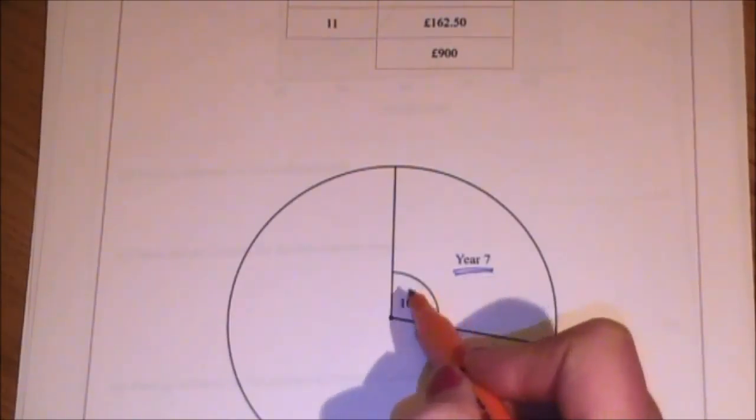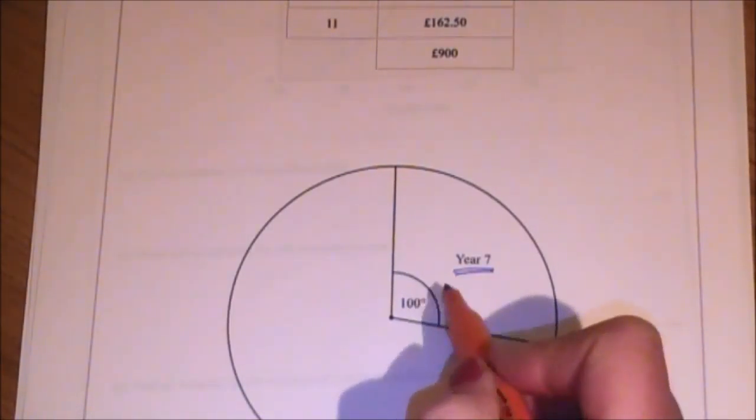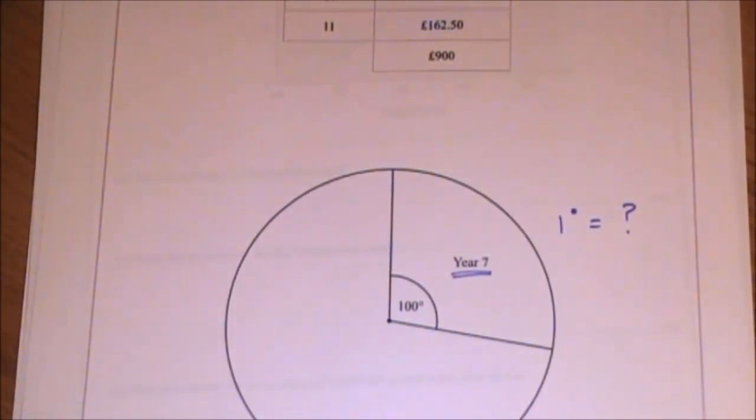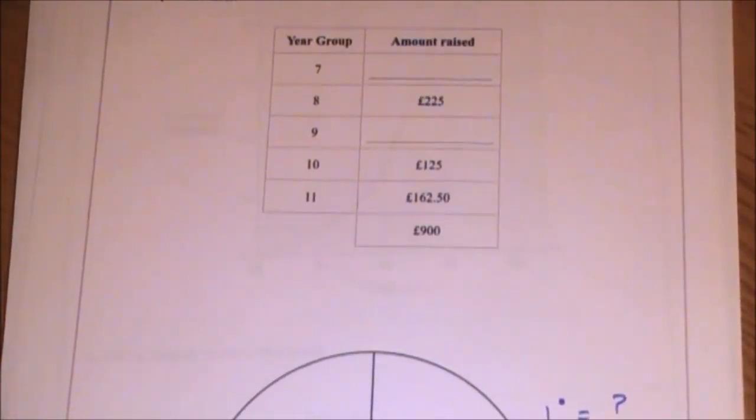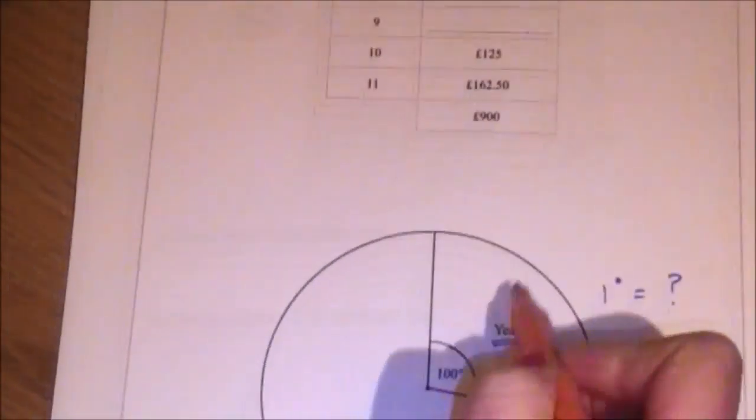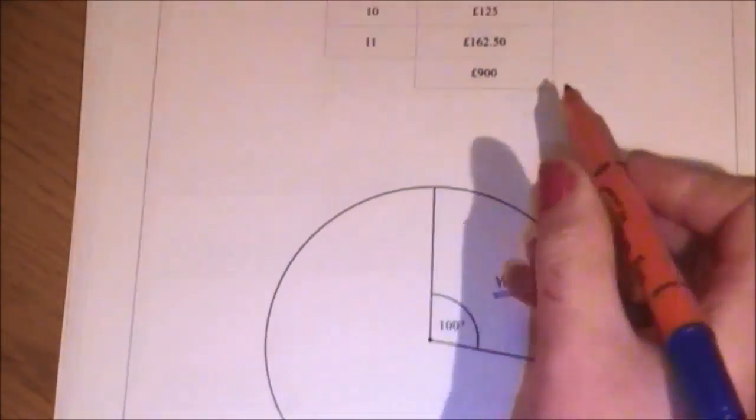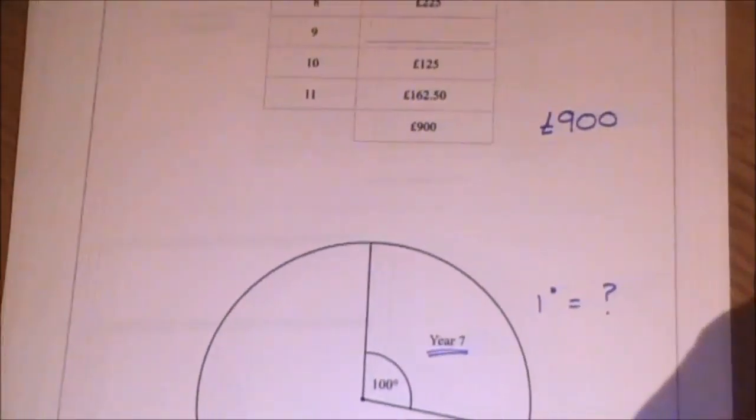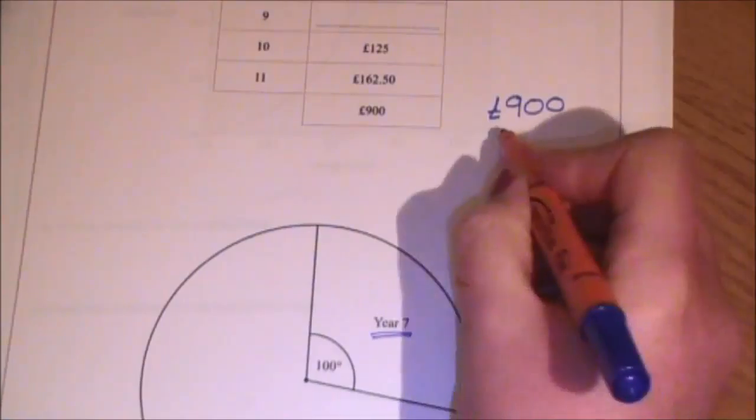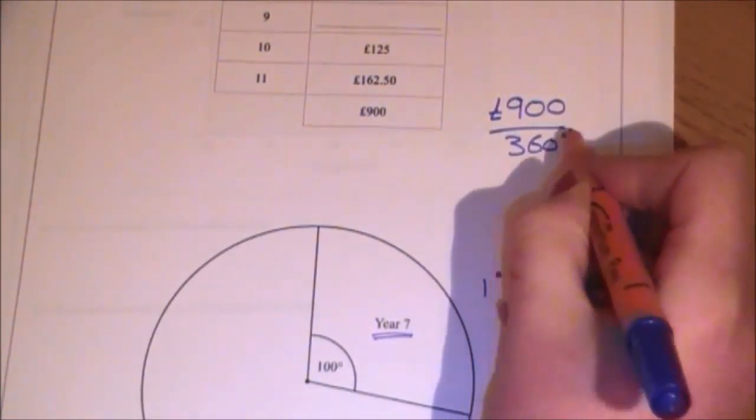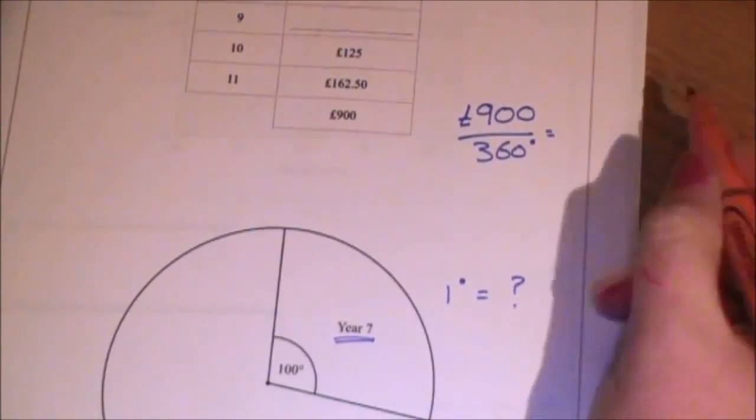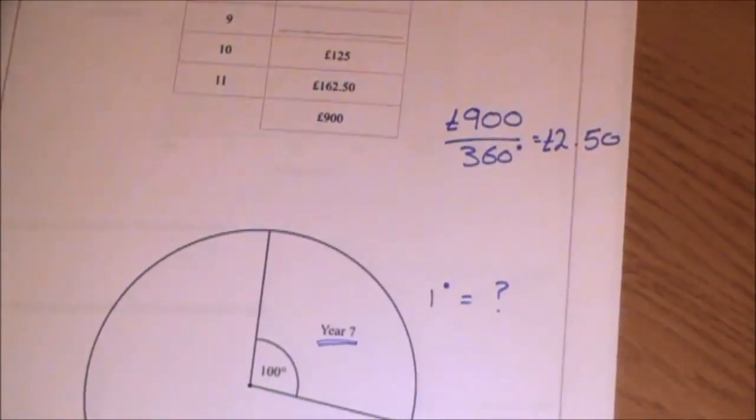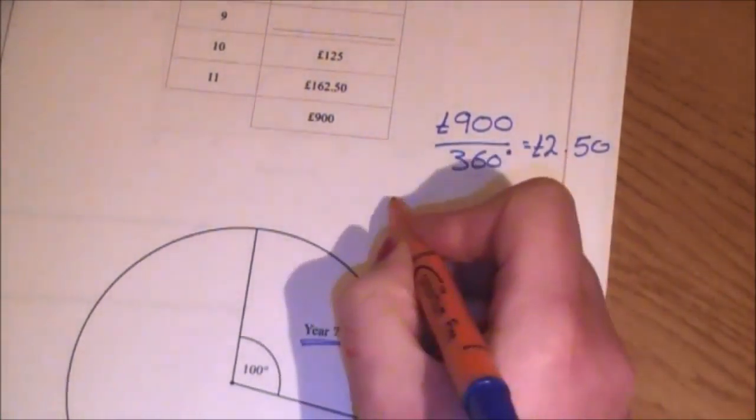They're telling me that year 7 is represented by 100 degrees. In order to work out what 100 degrees is worth, I need to work out how many pounds one degree represents. In order to do that, I take the fact that we are dealing with a pie chart here representing 900 pounds. So there's 900 pounds altogether. That is represented by the full pie chart. So it's 900 pounds divided by the 360 degrees. You put that on your calculator and you end up with 2.5, which is £2.50. So £2.50 is what one degree equals.